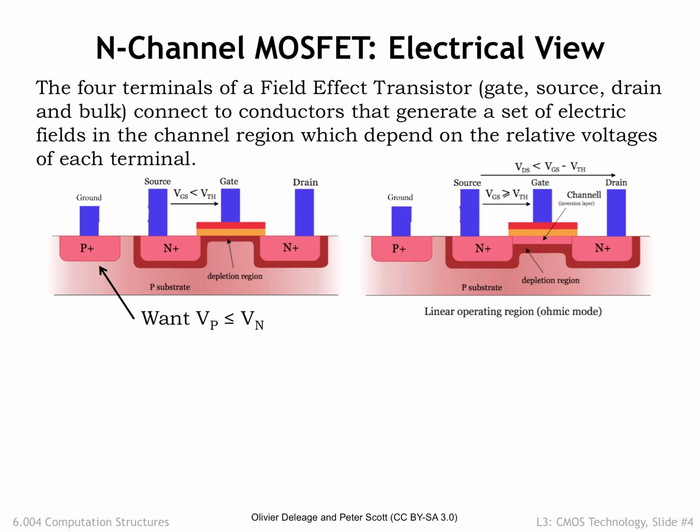Current will flow from drain to source in proportion to VDS, the difference in voltage between the drain and source terminals. At this point, the conducting inversion layer is acting like a resistor governed by Ohm's law, so IDS is equal to VDS divided by R, where R is the effective resistance of the channel.